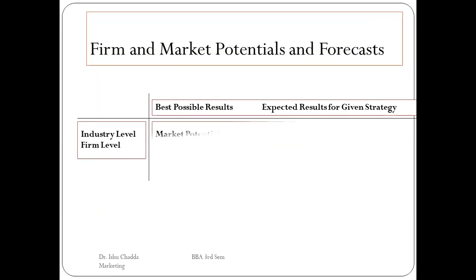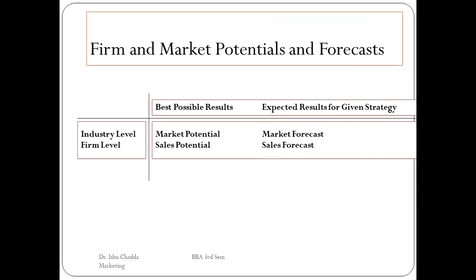Firm and market potentials: at the industry level, the best possible result is market potential and the expected result is the market forecast. At the firm level, the best possible result is sales potential and the expected result is the sales forecast. The sales volume of the firm indicates your best possible result, while the sales forecast for the near future will be the expected result for a given strategy.